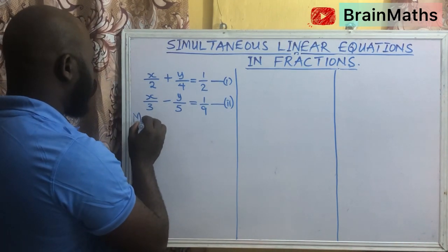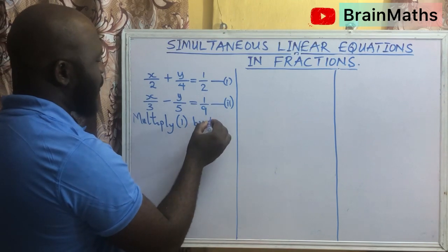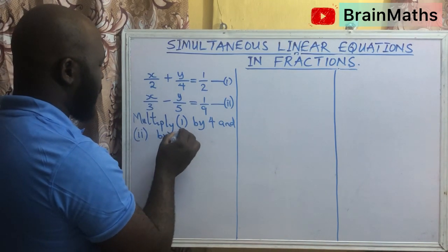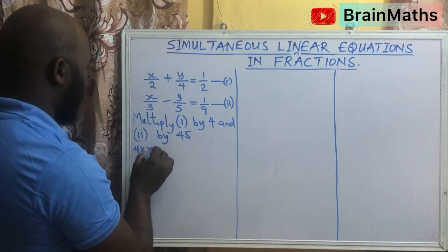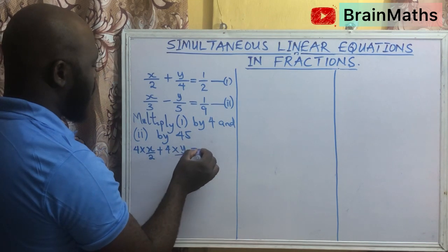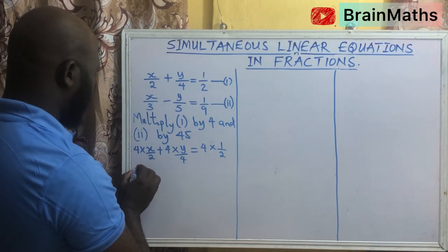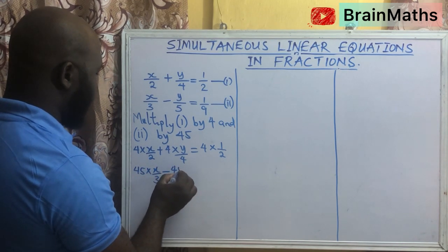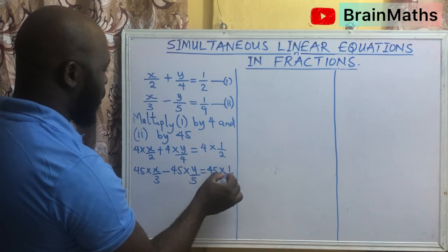So we multiply it through. We say multiply equation 1 by 4 and equation 2 by 45. So this is going to give us equation 1 by 4: 4 times x over 2 plus 4 times y over 4 equals 4 times 1 over 2. And the second one is 45 times x over 3 minus 45 times y over 5 equals 45 times 1 over 9.